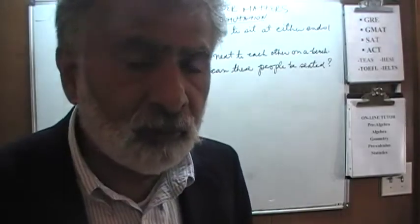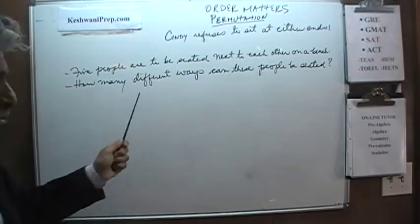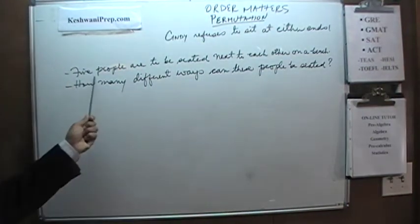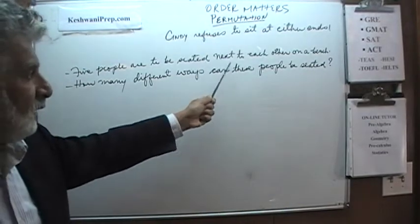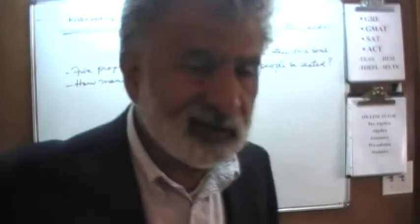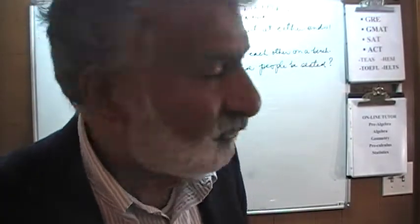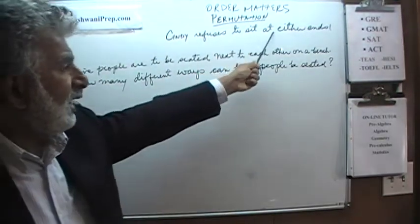In this video today we will do one very simple problem dealing with the concept of permutation. As you can see the problem is already on the blackboard. It says that we have five people who are to be seated next to each other on a bench. The question simply is how many different ways can these people be seated given one condition? The one condition that we must observe is that one person named Cindy refuses to sit at either end.